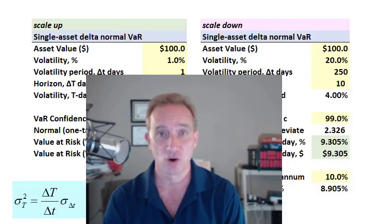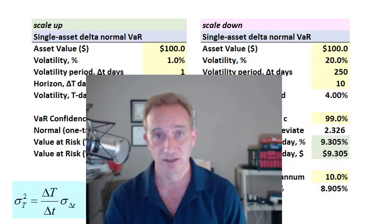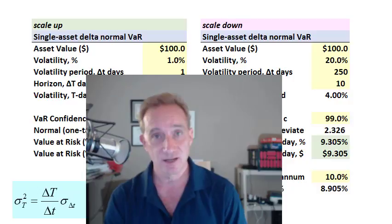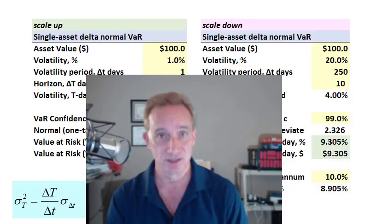How do we translate volatility over time? Let's say scale a one-day volatility up to a 10-day volatility, or scale an annual volatility down to a 10-day volatility.